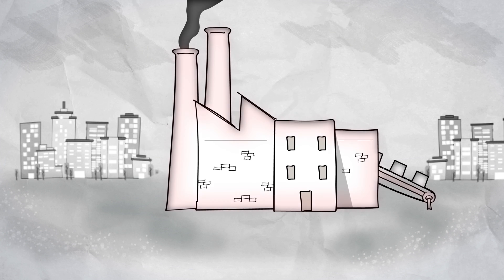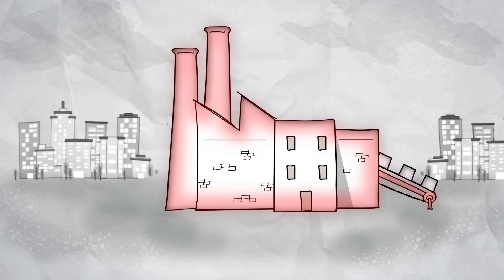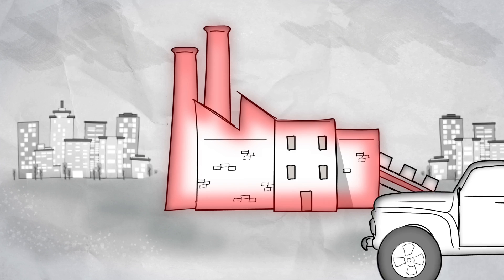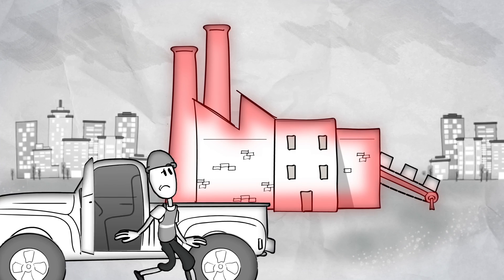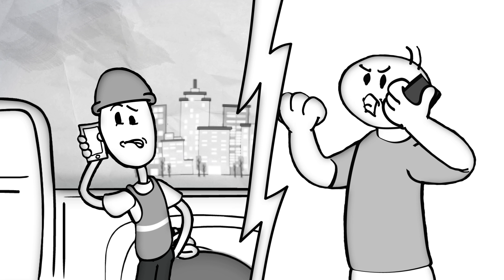Because when something goes wrong, Bob has unplanned downtime, which means he has unplanned site visits, which means he has unhappy customers.